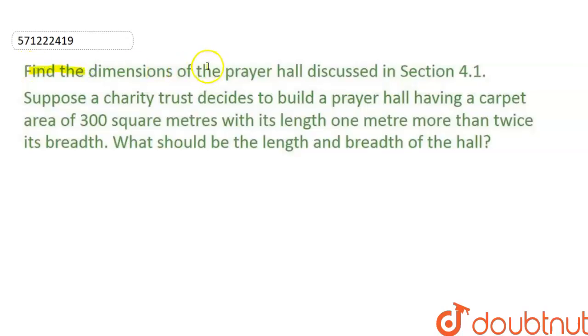Find the dimensions of the prayer hall discussed in section 4.1. Suppose a charity trust decides to build a prayer hall having a carpet area of 300 square meters with its length 1 meter more than twice its breadth. What should be the length and the breadth of the hall?